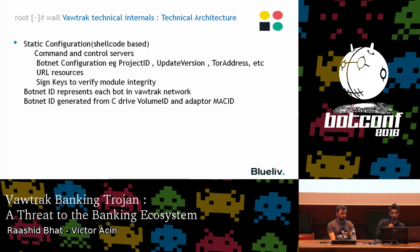Regarding the static configuration buffer, it's a buffer in the packed region of the binary consisting of parameters essential for the malware to run — for example, the command and control servers, the botnet configuration such as project IDs, the version, TOR addresses in earlier versions, and cryptographic keys to verify the integrity of downloaded modules. The most important parameter is the botnet ID, which represents the unique bot in a Vawtrak network, generated from a combination of the C drive volume ID and the adapter MAC address.